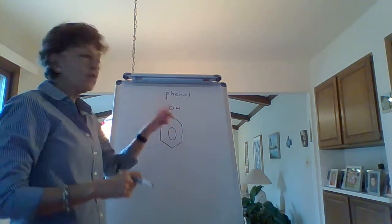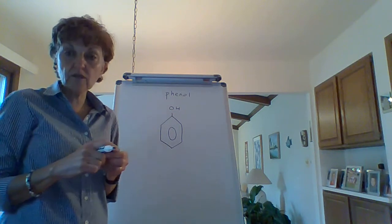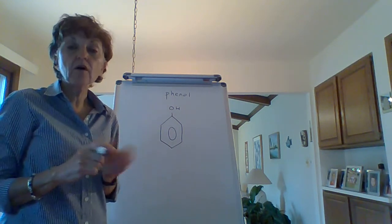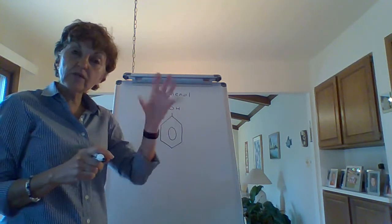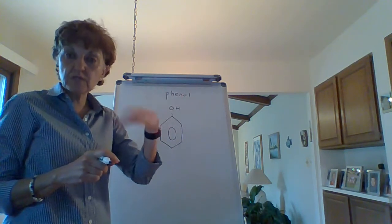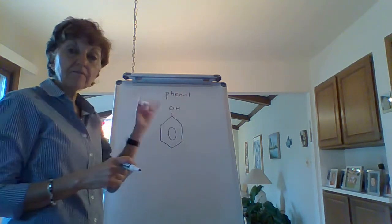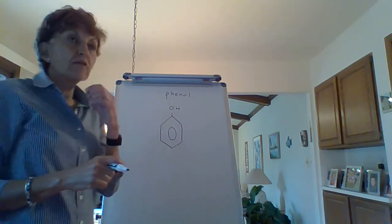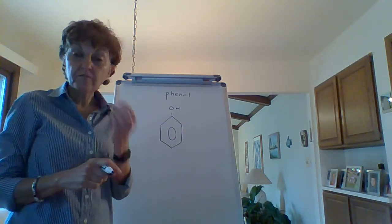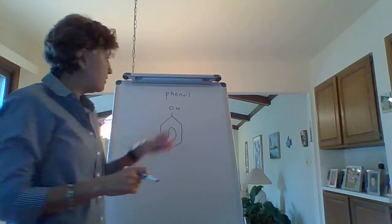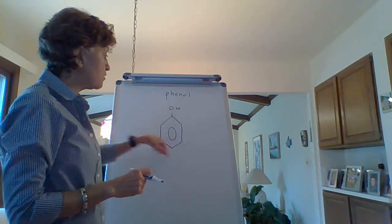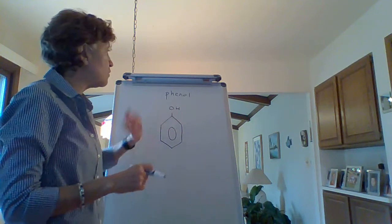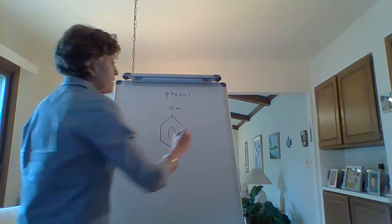A benzene ring with a hydroxyl group is called a phenol. Phenyl was when you had a benzene as a substituent on a parent chain. Phenol is a benzene with an OH. The difference is that the phenol is attached to an aromatic ring, so it is slightly acidic.